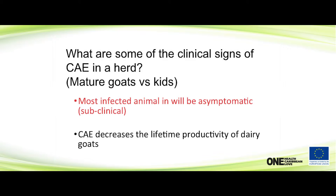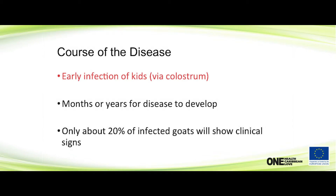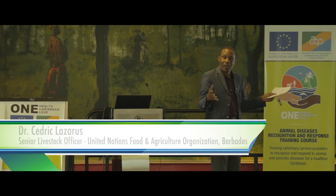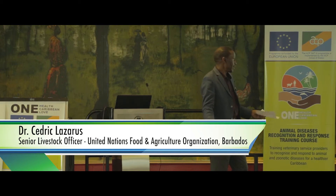You might never see symptoms, especially if animals go to slaughter when they're about a year old — they won't live long enough for you to see any symptoms. But if they live long enough, CAE will decrease the lifelong productivity of dairy goats. As for how animals get it: colostrum. Early infection of kids is the predominant way — it's thought to account for 99% of cases.